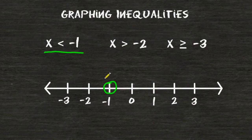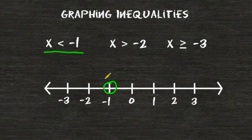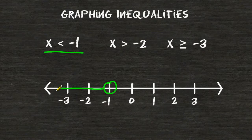The next thing we have to do is draw an arrow to show where all the values are located on the number line that are in fact less than negative 1. And we would say all numbers moving in this direction of our number line are less than negative 1.